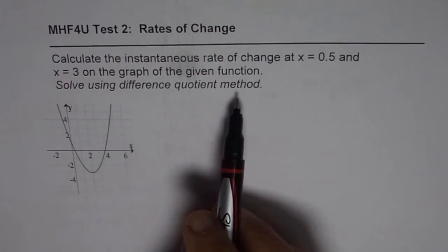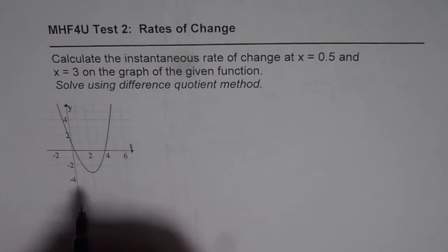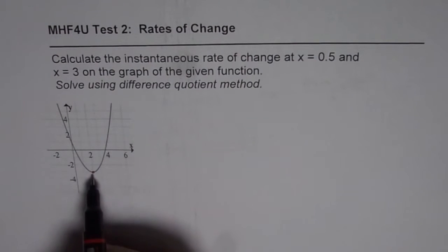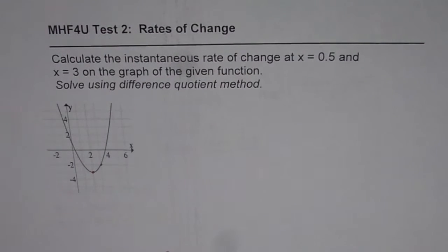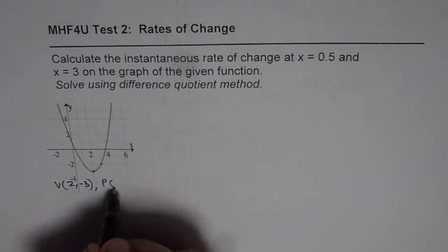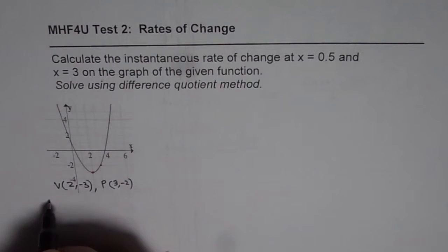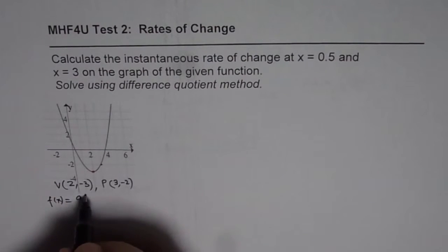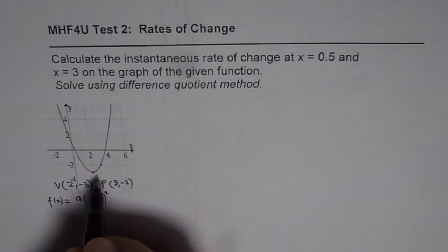To use the difference quotient method we need to first find the equation of the function itself. From this graph of a parabola we notice that the vertex is at (2, -3), and we can take another point — the point at x equals 3 is a good point to consider. The vertex is at (2, -3), and we have a point P where at x equals 3 the value is -2. So that will give us the equation of the parabola. Let's begin with vertex form: f(x) equals a times (x minus 2) squared, and the y-value of the vertex is -3.